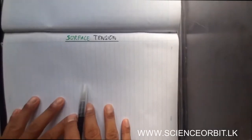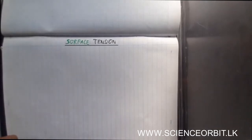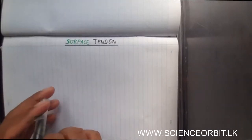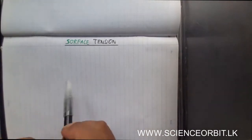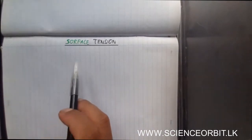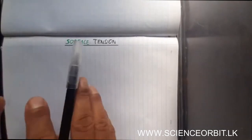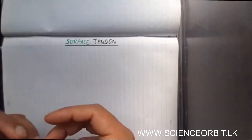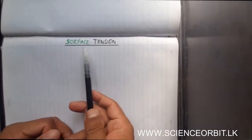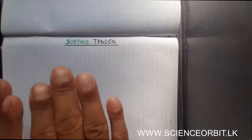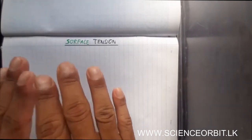Hello everyone. The lesson we are going to learn today is called surface tension. Surface tension is a property of liquids, mainly just like viscosity. The word 'surface' is highlighted because it has something to do with the surface. When you say viscosity, we consider the whole liquid, but surface tension is a property which is considered only on the surface of the liquid.